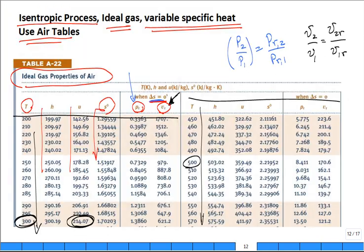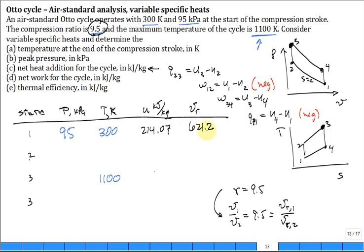I'll put in 621.2 for V sub R. What I do is calculate V sub R2. In this case, V sub R2 is equal to V sub R1 divided by 9.5, and you get 65.389. Now once I get that value, what do I do?